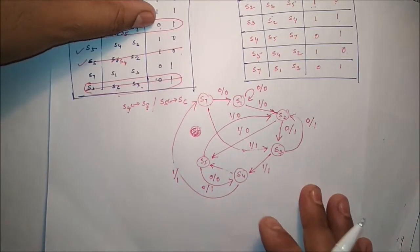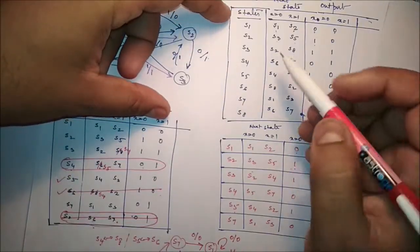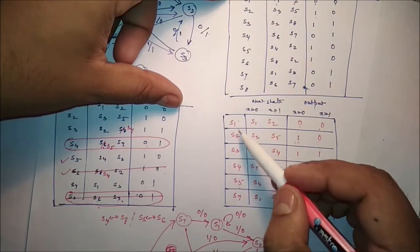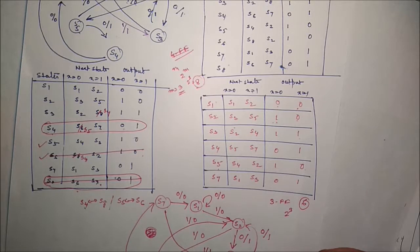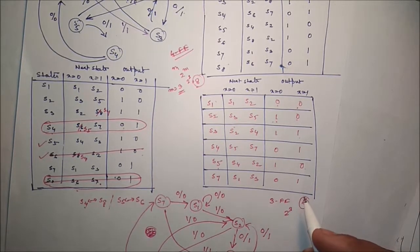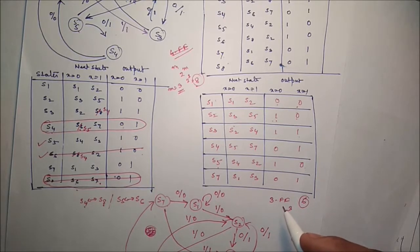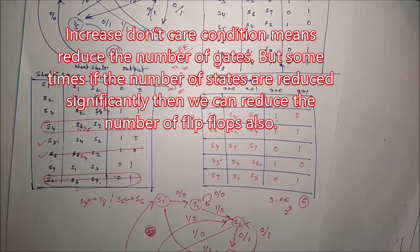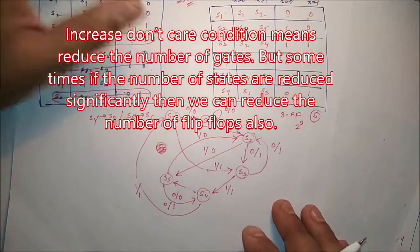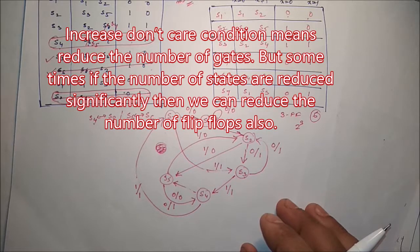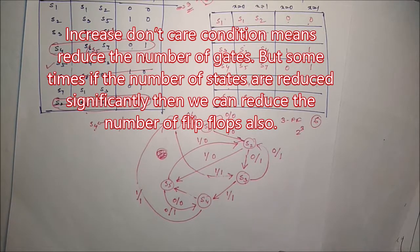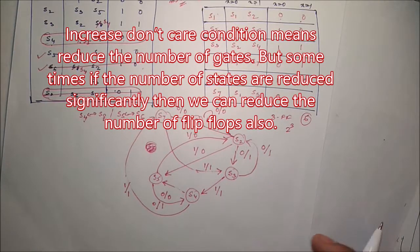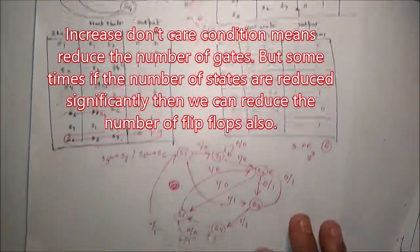The original circuit had 8 states; the simplified circuit has 6 states, so 2 unused states remain. For unused states, we use don't care conditions. When we use don't care conditions, we obtain simpler boolean functions and need less equipment. Reducing the number of states increases don't care conditions, which leads to simpler boolean functions, meaning we need fewer logic gates. That is the use of state reduction.